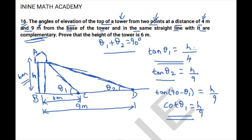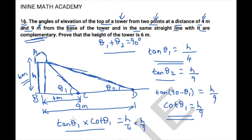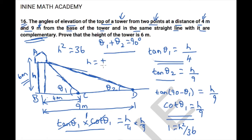Multiplying the left-hand sides and right-hand sides: tan(theta 1) × cot(theta 1) = (h/4) × (h/9). Since tan and cot are reciprocals, these cancel to give 1 = h² / 36. Therefore h² = 36, and taking the square root gives h = ±6. Since a negative height is not possible, h = 6 meters — which is what we needed to prove.